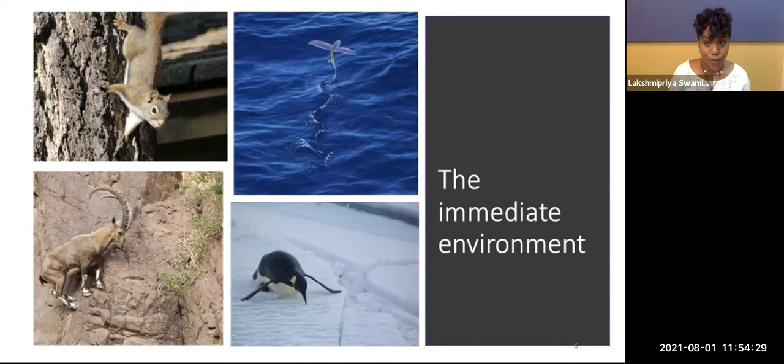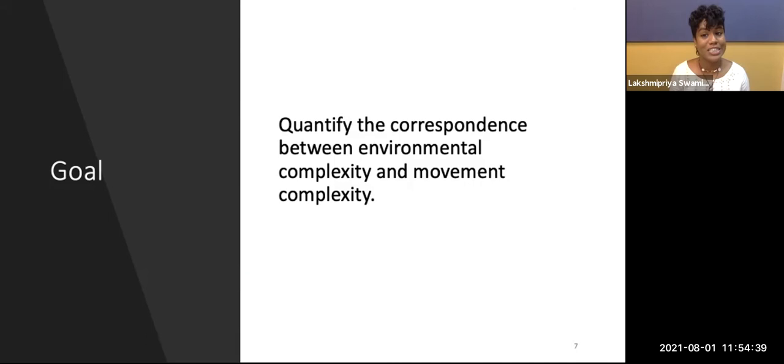Therefore, there is a need to quantify the correspondence between environmental complexity and movement complexity. Ideally, I would like to quantify this correspondence between environmental complexity and movement complexity. And this would allow us to use environmental complexity to ascertain what types of organisms may exist in a given environment. But in order to do this, we also need to quantify movement complexity.